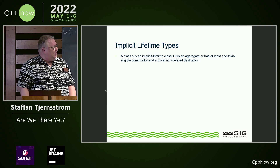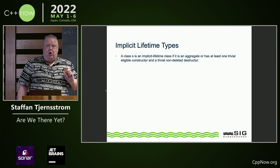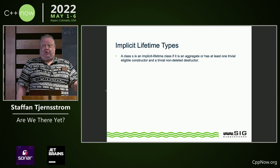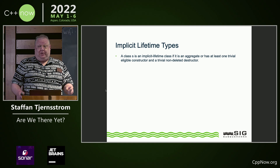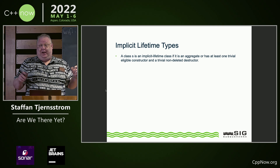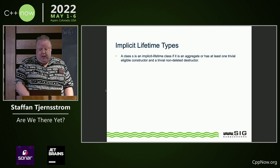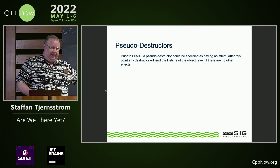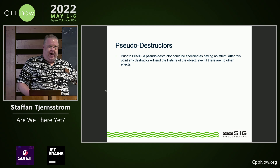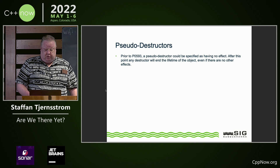So what are these magical implicit lifetime types that allow this to happen? It's an aggregate that has at least one trivial eligible constructor and a trivial non-deleted destructor, so that it's possible to start and end the lifetime of the object trivially — there's nothing to be done, so it might as well just have been deemed to occur in the first place. There's also the detail on pseudo destructors, just to make sure that these implicit lifetime types actually end their lifetime when the non-deleted trivial destructor is called.